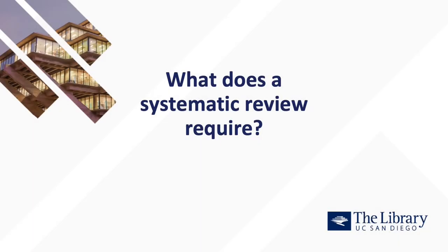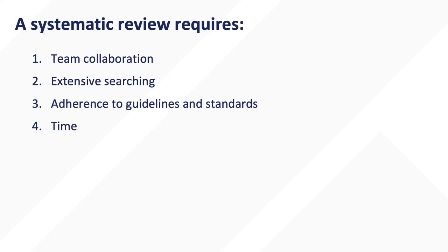This short video explains the resources you will need in order to conduct a systematic review. Preparing to conduct a systematic review requires four elements: team collaboration, extensive searching, adherence to guidelines and standards set by various organizations to ensure transparency, reproducibility and bias mitigation, and time. We will discuss each element in more detail.